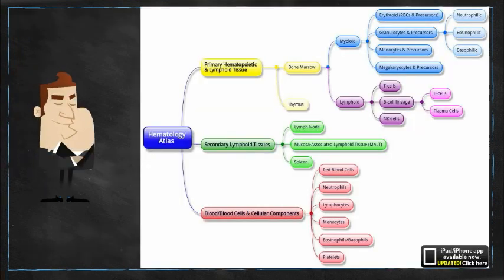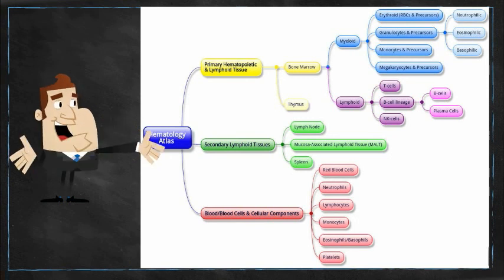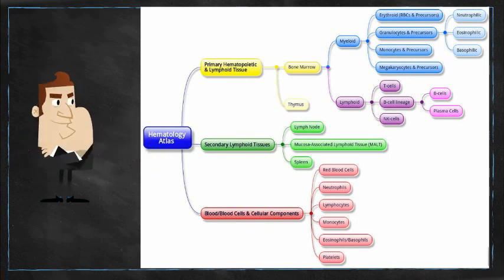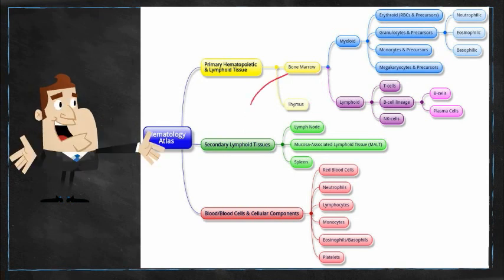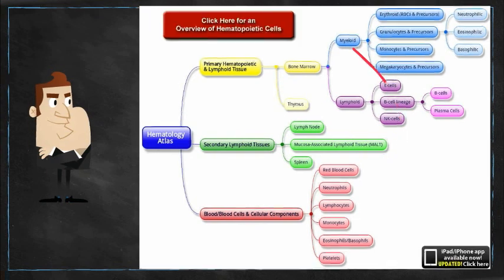So in summary, everything starts off in the bone marrow. T cells actually have to end up in the thymus before they can end up in the blood. While B cells have to go to the secondary lymphoid tissues like the lymph node before they can end up in the blood. While myeloids go directly to the blood.